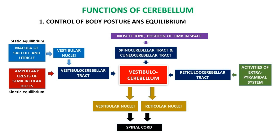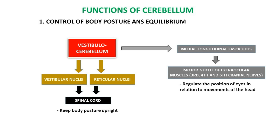Efferents from the flocculonodular lobe and fastigial nuclei go to the spinal cord through vestibular and reticular nuclei via vestibulospinal and reticulospinal tracts. Efferents via vestibular nuclei and reticulospinal nuclei influence spinal motor neurons to keep body posture upright, and via the medial longitudinal fasciculus, which connects motor nuclei of extraocular muscles, regulate the position of the eyes in relation to movements of the head.